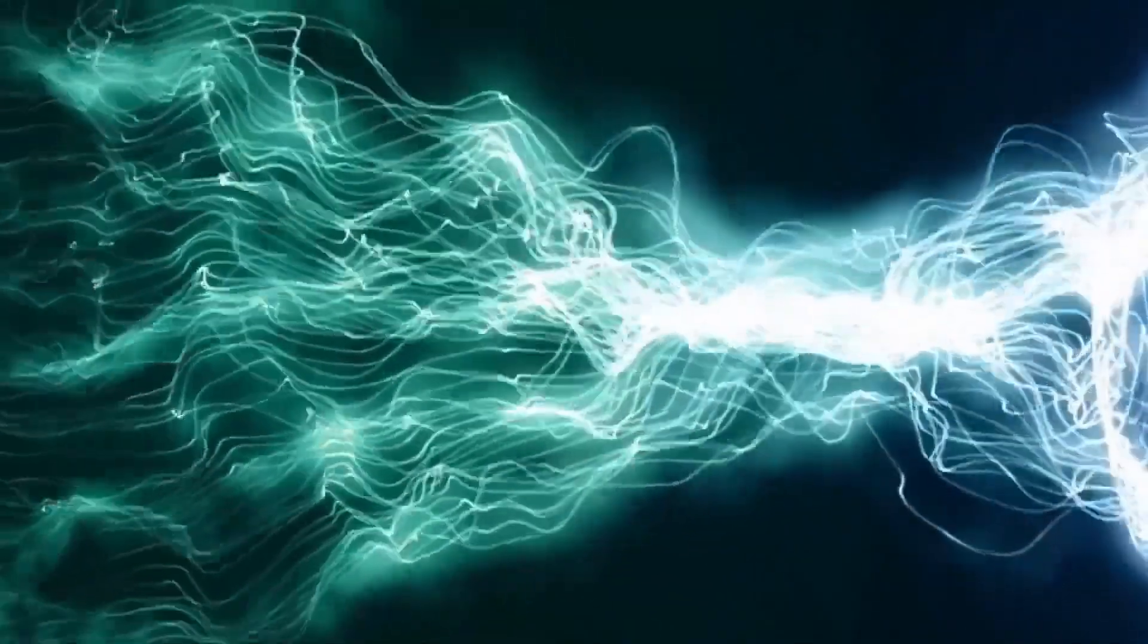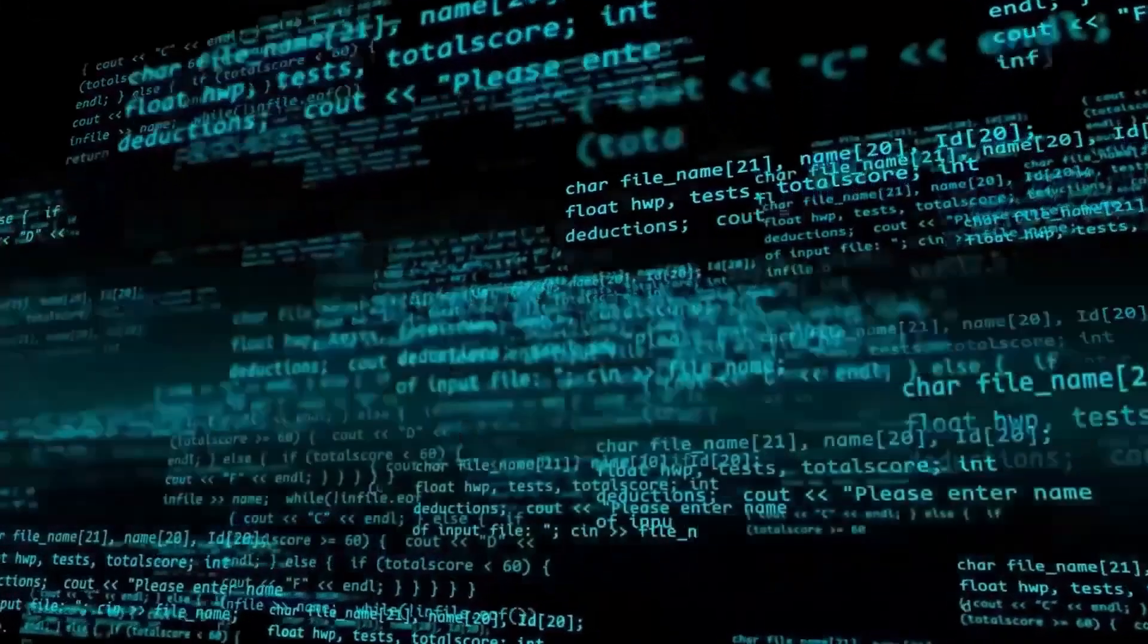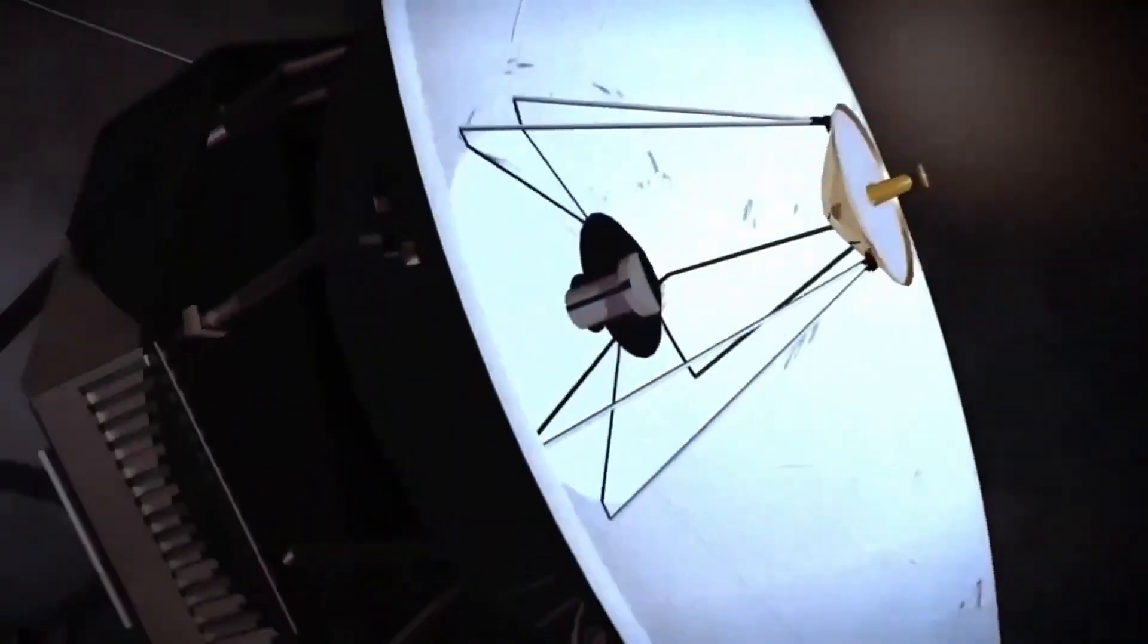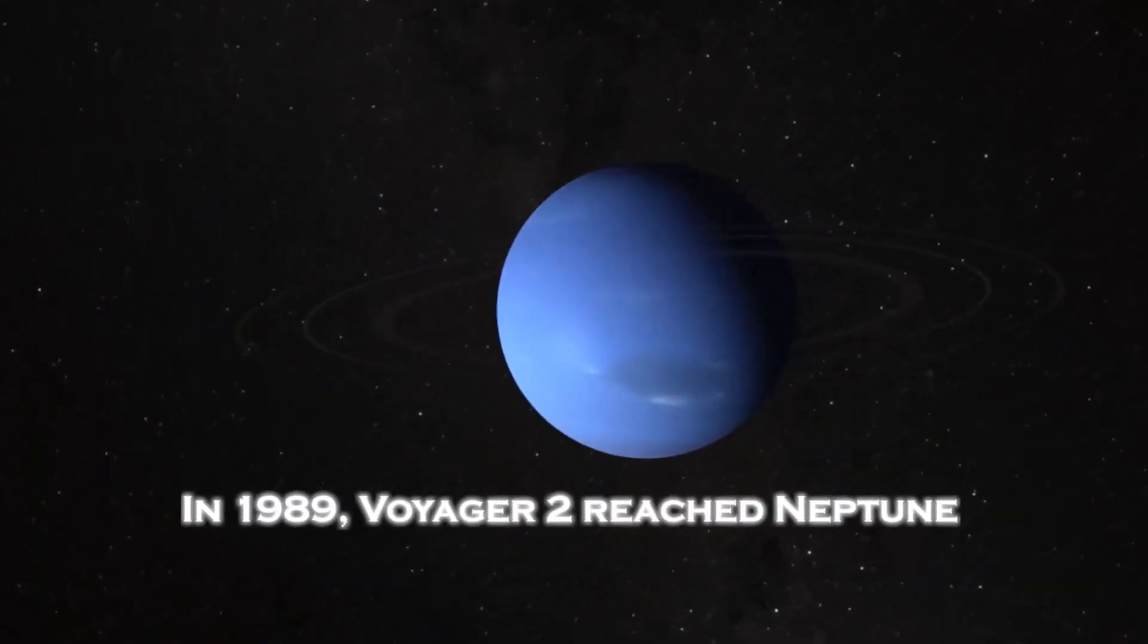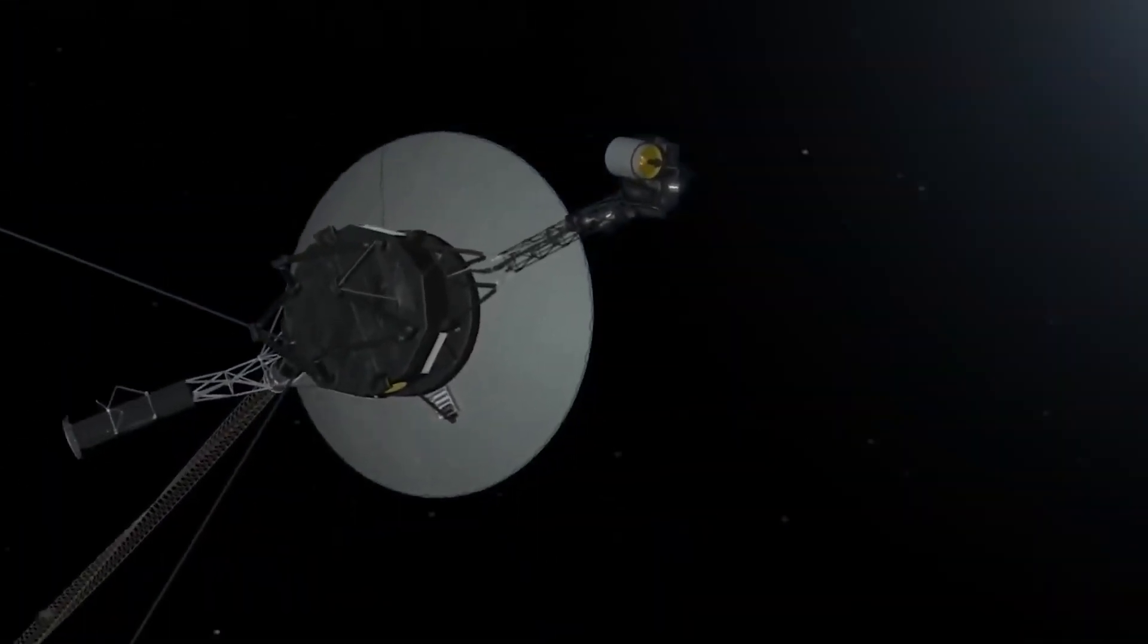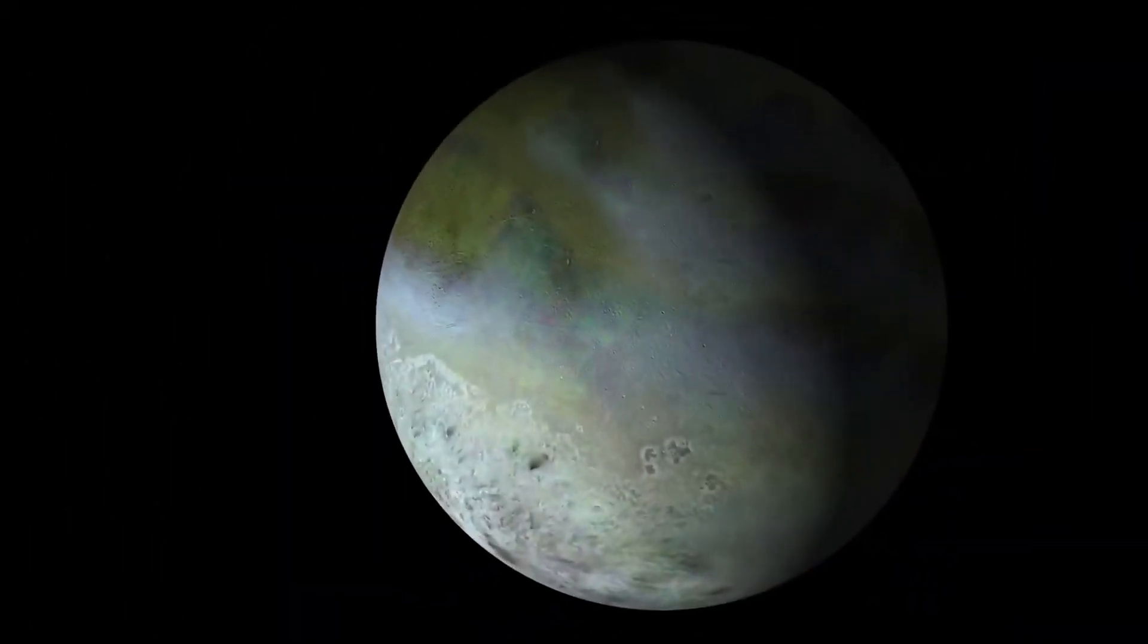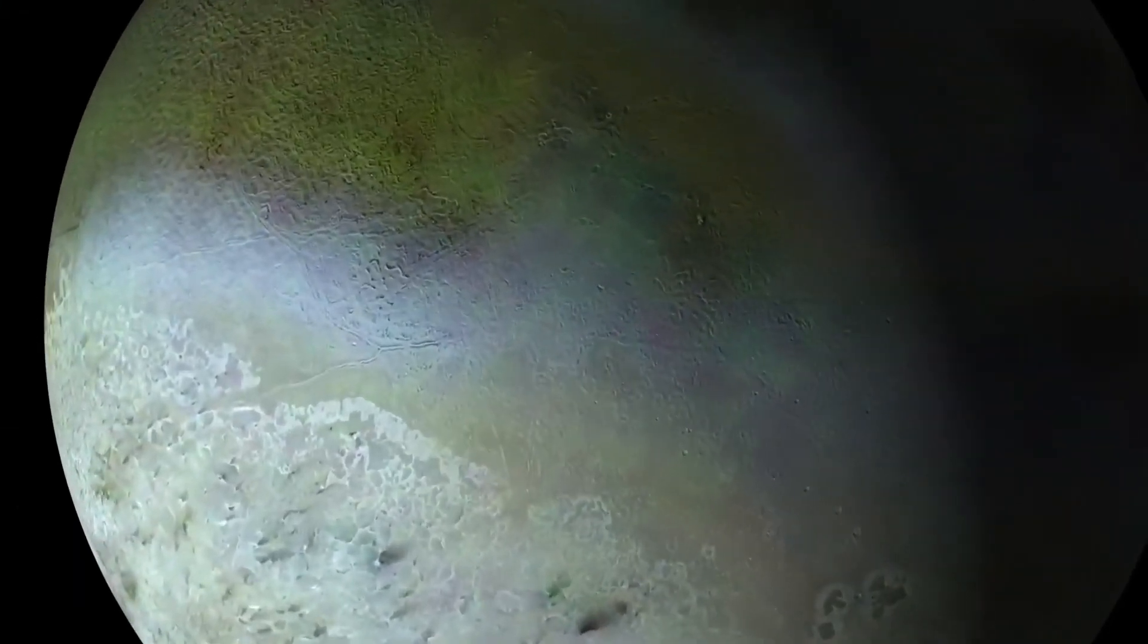Perhaps the most iconic image captured by the Voyagers wasn't of a distant planet or mysterious moon but of Earth itself. In 1990, as Voyager 1 ventured beyond the solar system, it turned its camera back toward home and captured the pale blue dot. Taken from over 4 billion miles away, the image showed Earth as a mere 0.12 pixels in size, floating in the vast emptiness of space.